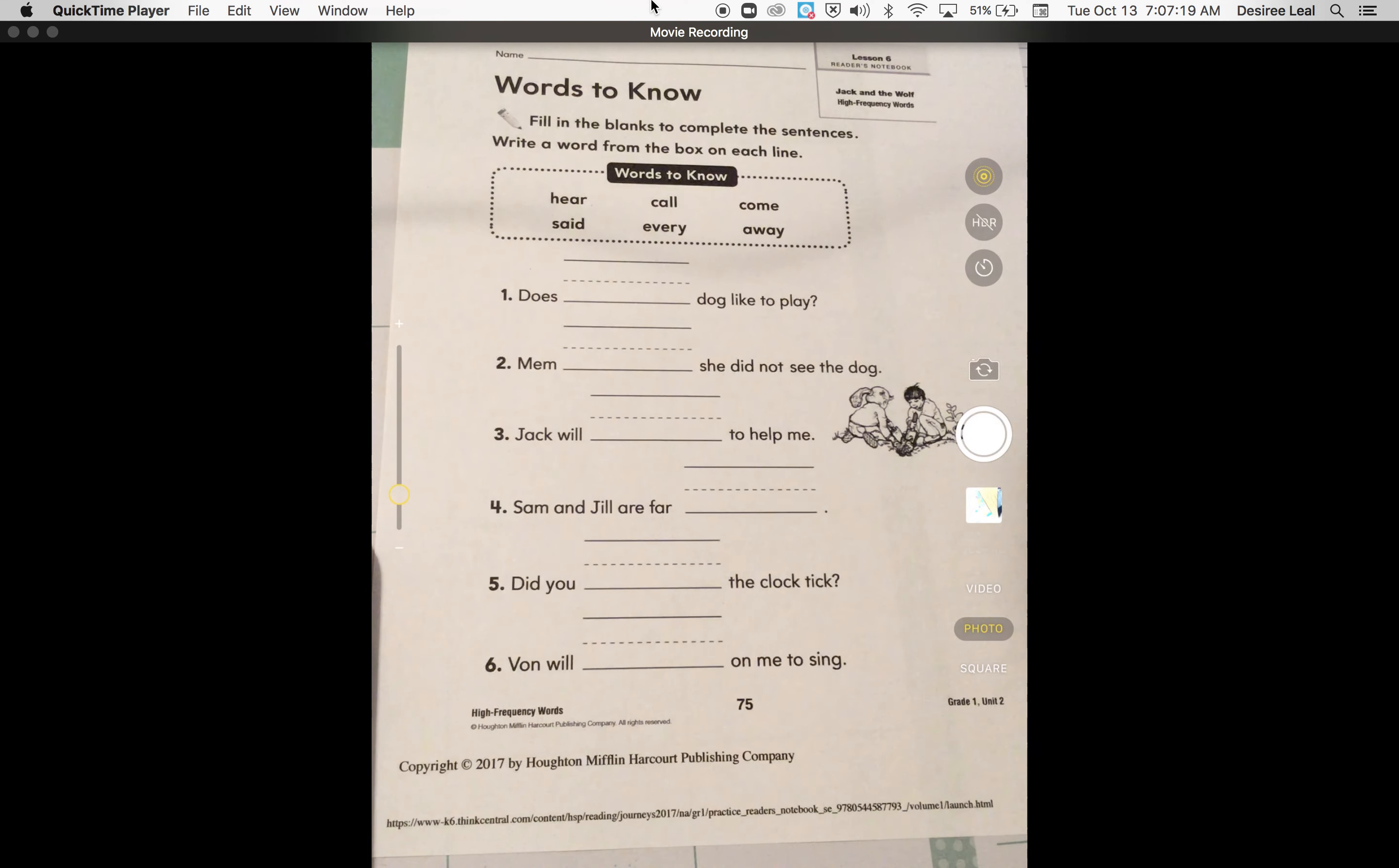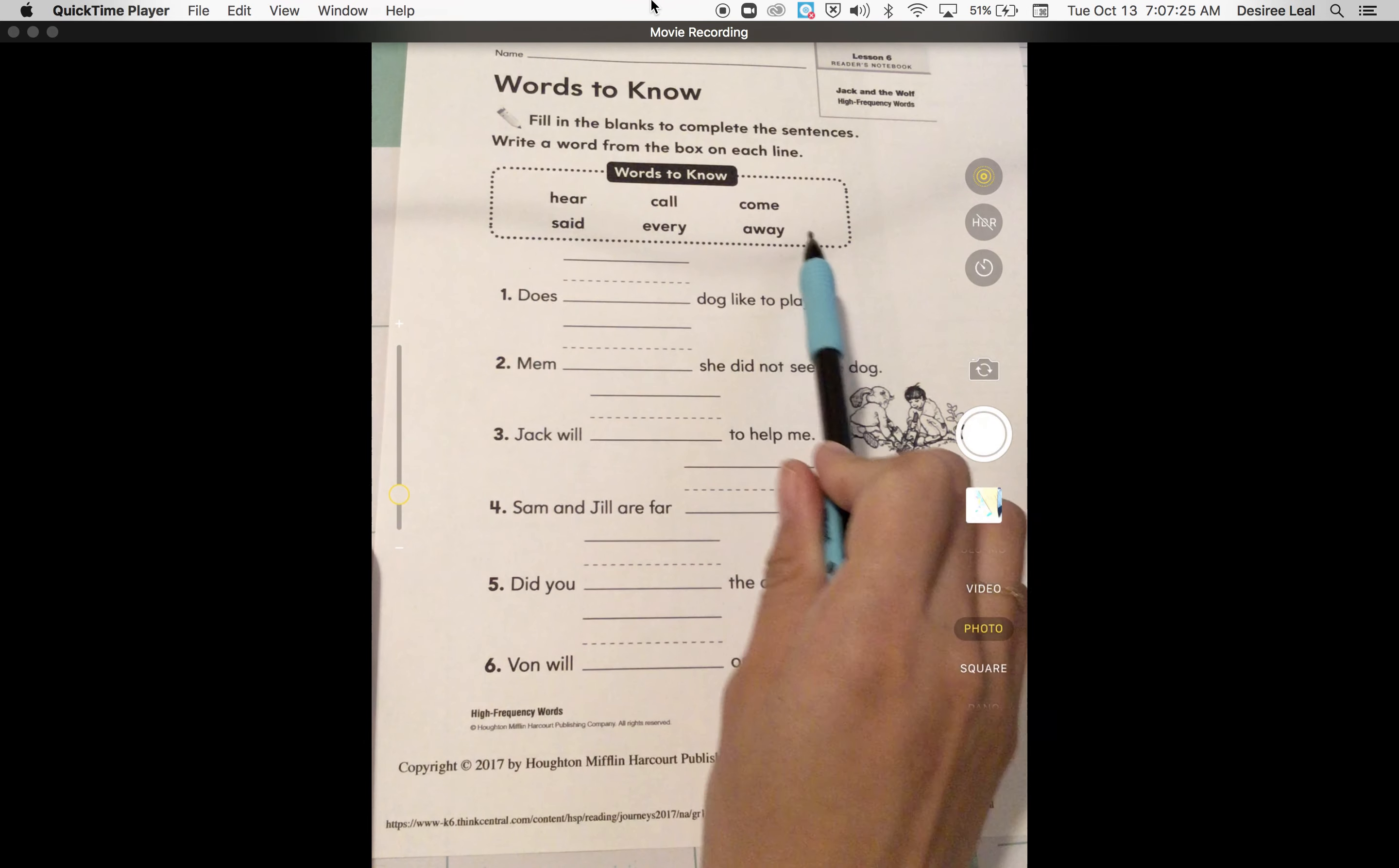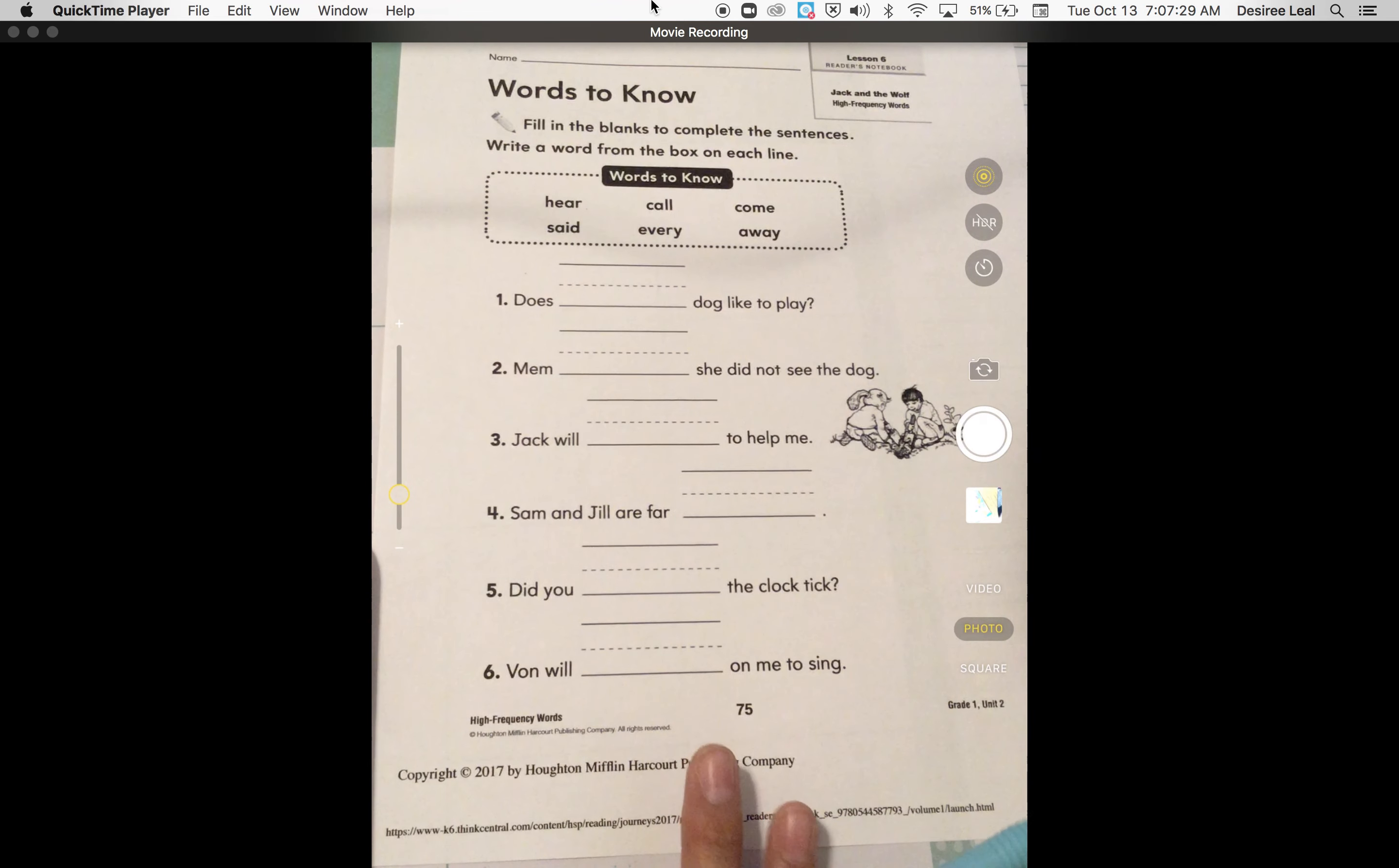Alrighty boys and girls, so for today for ELA, what you're going to be completing is our Words to Know. These are our sight words that we have this week, so please go ahead and go into your reader's notebook, which is your cat book, and find page 75.